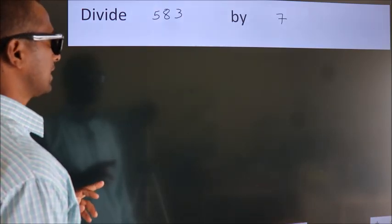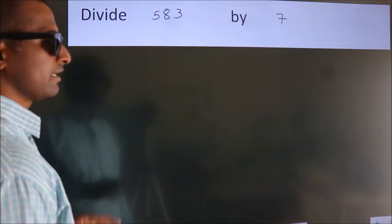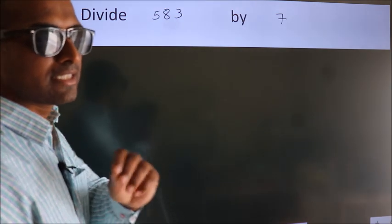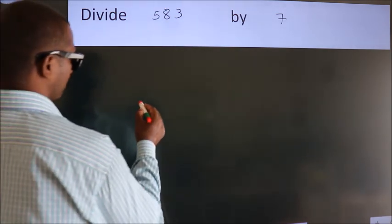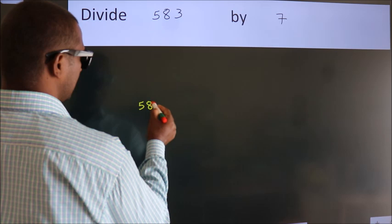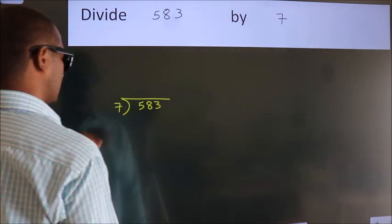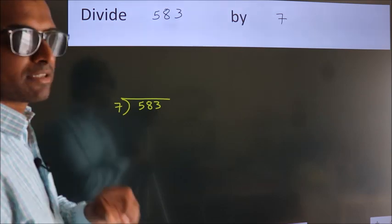Divide 583 by 7. To do this division, we should frame it in this way: 583 here, 7 here. This is your step 1.